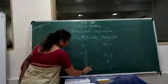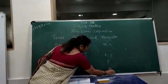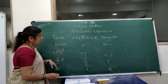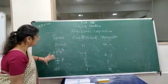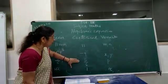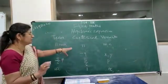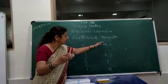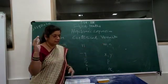If I take 5 upon 6 times P: 5 upon 6 is the coefficient and P is the variable. If I take just A — nothing else written — it means 1 into A, but we don't write 1 because it is understood. So the coefficient is 1 and the variable is A. The coefficient is the number, and when it comes as an alphabet, it is the variable.